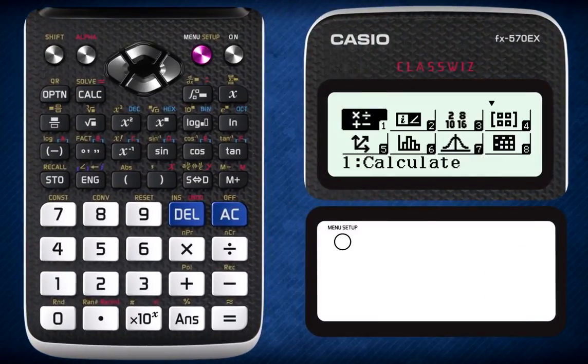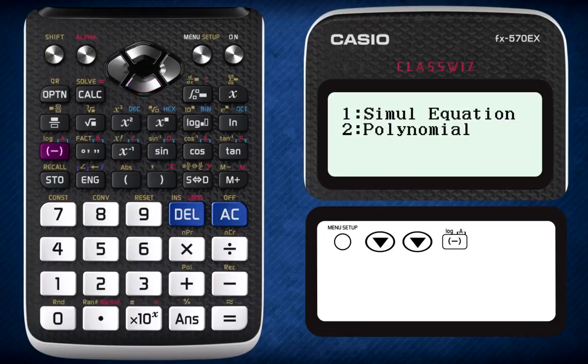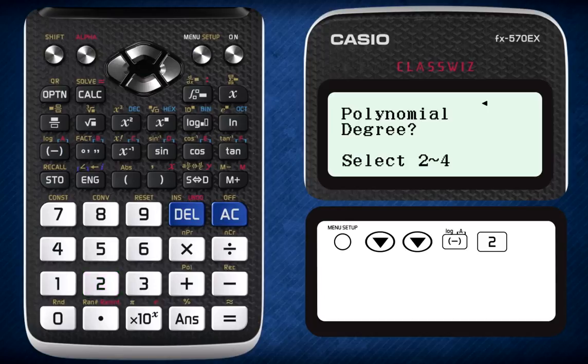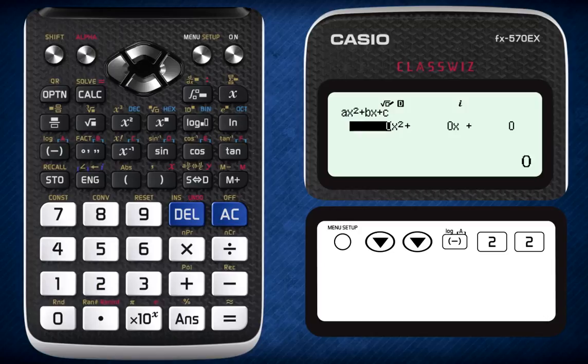First, press menu, then scroll down twice, press the negative sign button to select option A, press 2 to select solving polynomial equation, and then press 2 again to select solving quadratic equation.